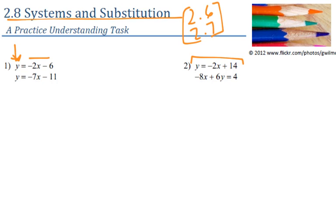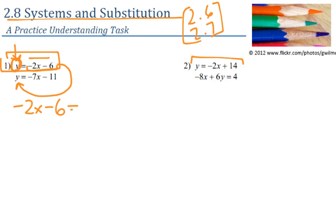Just like with substitution in any sport, that equal sign with a variable all by itself tells us we've got a position that can be substituted. So I know that y is in the same position as negative 2x minus 6. I look at my other equation and substitute that y — because it's equal — with the other piece. I'm subbing in negative 2x minus 6.